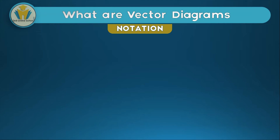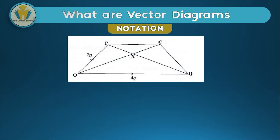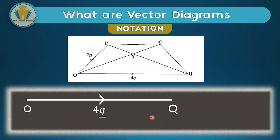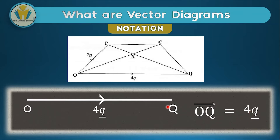Now we need to know the notation used in vector diagrams. Looking at the vector OQ from the diagram: OQ moves from O to Q, with a value of 4q representing the magnitude and an arrow showing the direction. When we write vector OQ, the two letters represent the points involved, and the arrow shows the direction of movement. The value 4q is the magnitude of vector OQ.